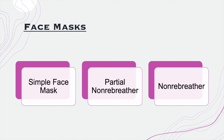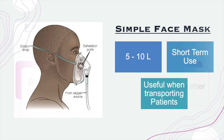There are three face masks to discuss. The first is the simple face mask, which provides five to ten liters of oxygen and is used for short-term oxygenation therapy. It is very handy when transporting patients — for example, when transferring a patient to CT scan, X-ray, or another unit, we can apply a simple face mask to maintain their oxygenation during transport.